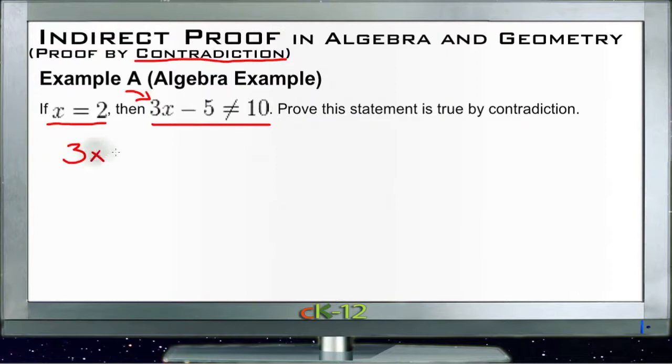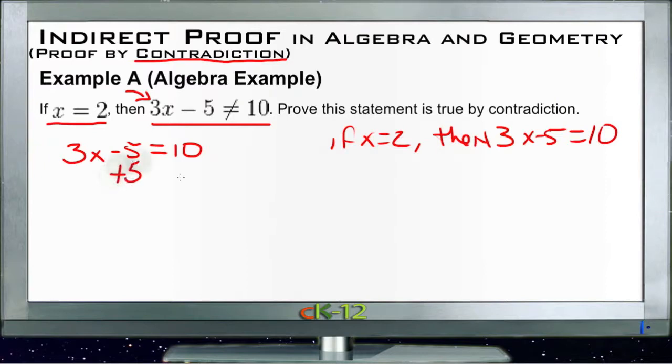Which would mean that we would be assuming that 3x minus 5 is equal to 10. So then our new statement would be if x equals 2, then 3x minus 5 does equal 10. Now we're working with the opposite of our original statement, and if we can prove that this can't be the case, then we've proven that our original statement must be. So we'll go ahead and solve for x here. If we add 5 to both sides, 5 cancels here, and we get 3x equals 15.